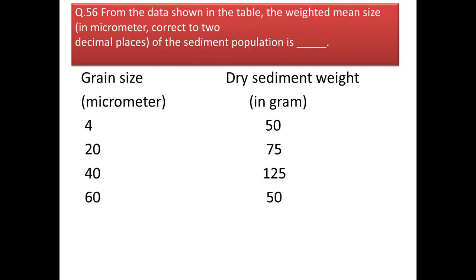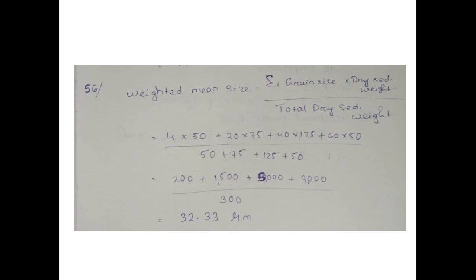Next question: from the data in the table, find the weighted mean size in micrometers of the sediment population. We are given grain sizes and their dry sediment weights. For weighted mean size, multiply each grain size by its dry sediment weight, add them all up, and divide by the total dry sediment weight. The total value comes out to be 32.33 micrometers.